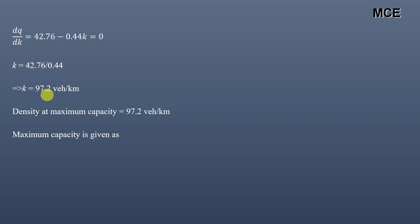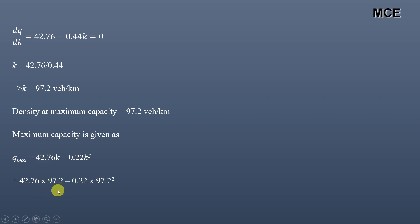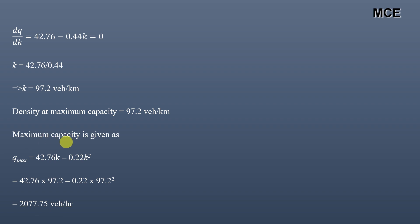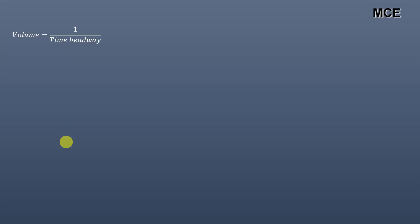The density at maximum capacity is 97.2 vehicles per kilometer. Substituting into the flow equation: q_max = 42.76 × 97.2 − 0.22 × 97.2² = 2077.75 vehicles per hour. This is the maximum capacity or maximum traffic volume.